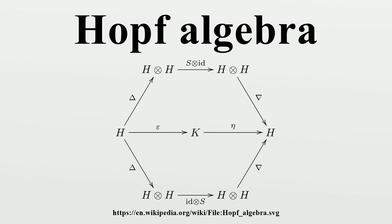Theorem: let A be a finite-dimensional, graded-commutative, graded-co-commutative Hopf algebra over a field of characteristic 0. Then A is a free exterior algebra with generators of odd degree. Quantum groups and non-commutative geometry: all examples above are either commutative or co-commutative. Other interesting Hopf algebras are certain deformations or quantizations of those examples which are neither commutative nor co-commutative. These Hopf algebras are often called quantum groups, a term that is so far only loosely defined.